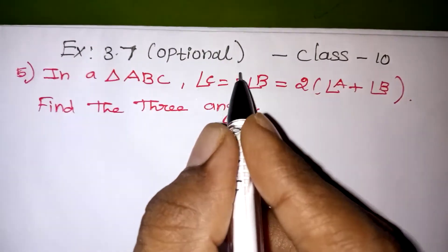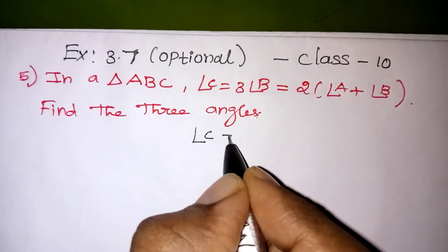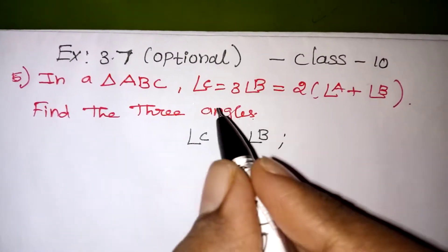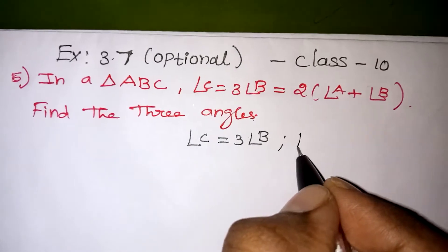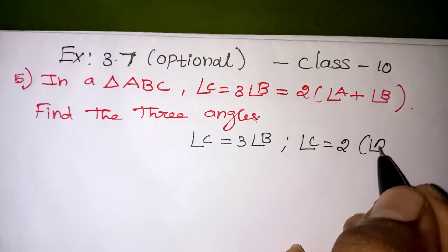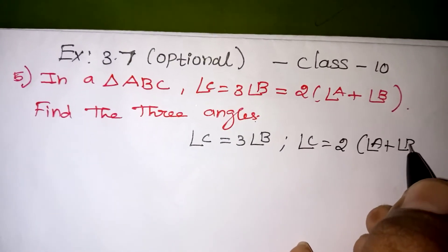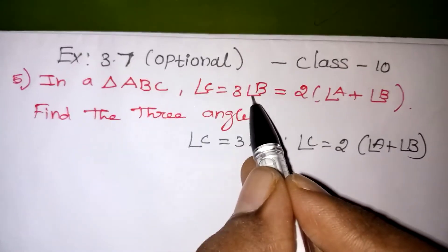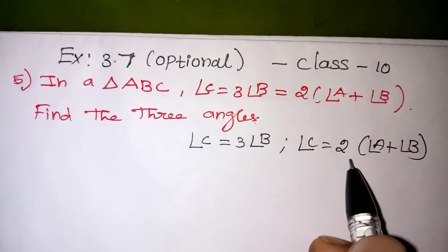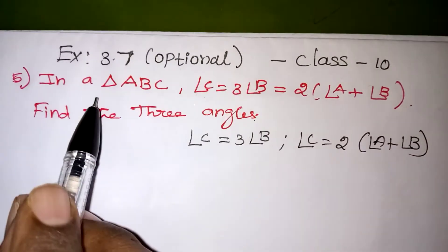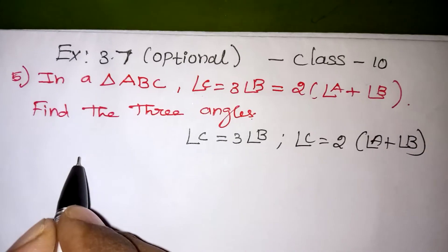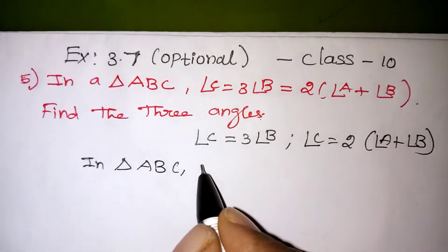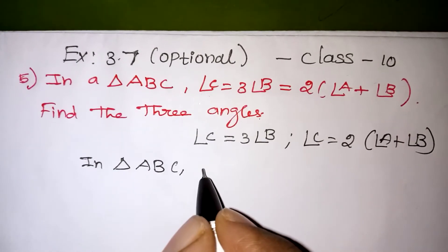From the given question, angle C can be written as 3 times angle B — that is one part. Another way, angle C is equal to 2 times angle A plus angle B, and these two are also equal. So angle C equals this term, and also equals this other term. They have mentioned it is in a triangle ABC.